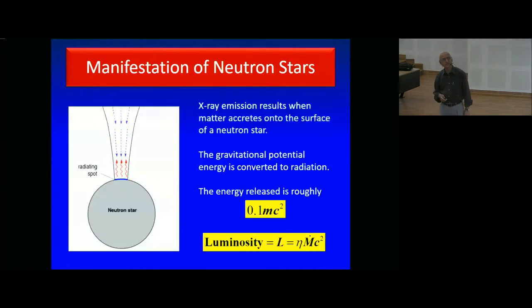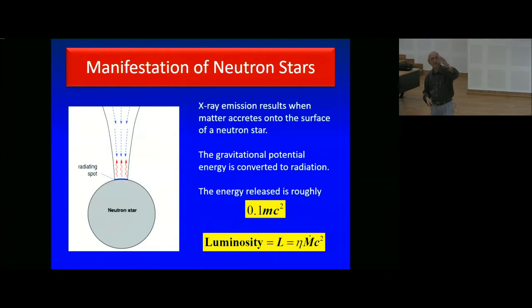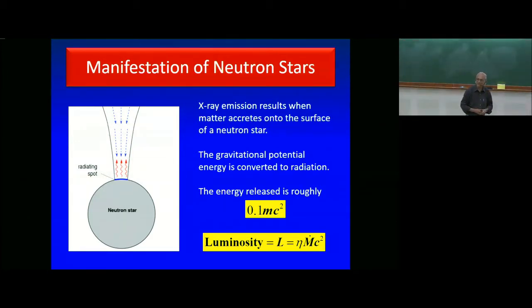A more interesting thing is: if matter falls on a neutron star, typically the energy release is 10% of the rest mass energy. So if matter falls on a neutron star, then the luminosity is η·Ṁ·c². This is a way to detect neutron stars that was predicted by the great Zeldovich long before neutron stars were discovered. But this is not how neutron stars were actually discovered.